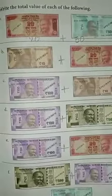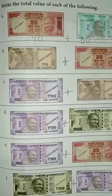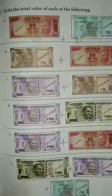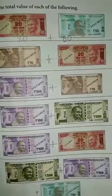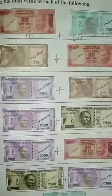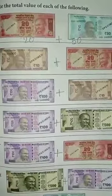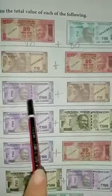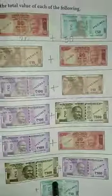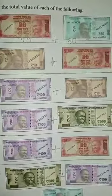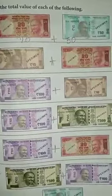So students, hope you understood the concept. Now it's time for homework. Write the total value of each of the following on page number 125 in your test book. Also stick some duplicate notes of rupees 20, 50, 10, 100, and 500 in your maths homework notebook, write the value, and send on WhatsApp. Thank you.